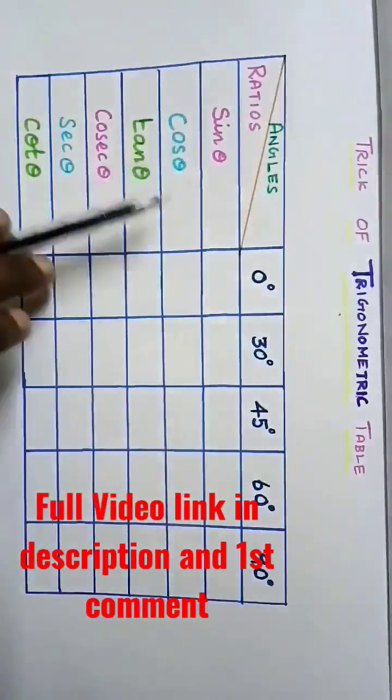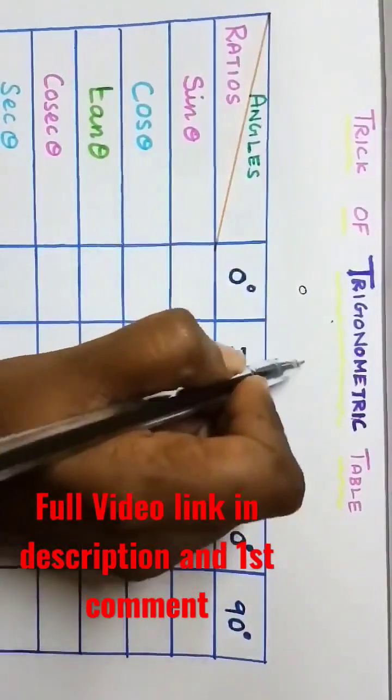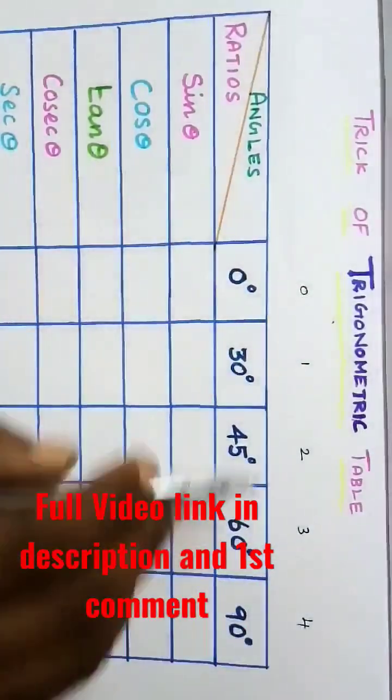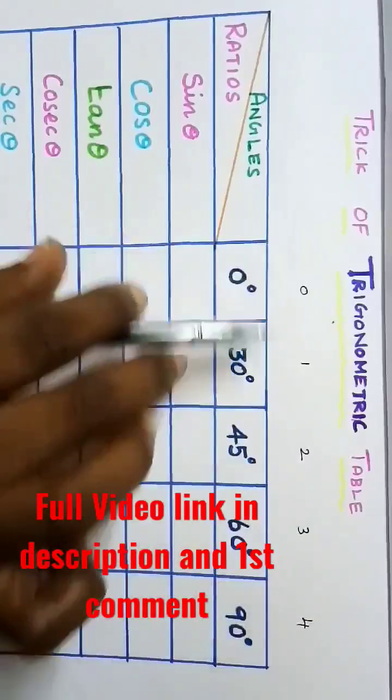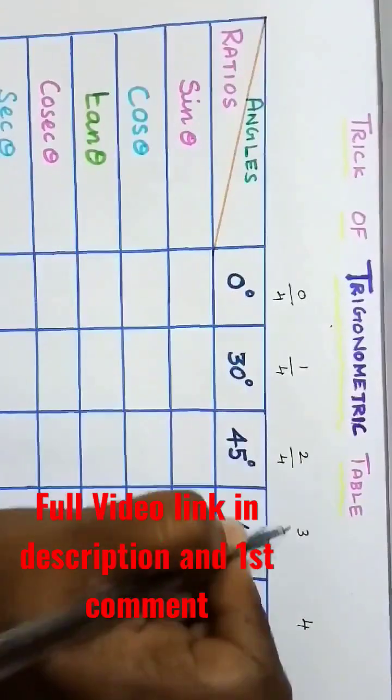First we are going to find out sine theta values, that is the first horizontal row. Just write the numbers from 0 to 4 in order: 0, 1, 2, 3, 4. Here the largest number is 4, so divide all the numbers by 4: 0 by 4, 1 by 4, 2 by 4, 3 by 4, and 4 by 4.